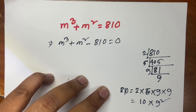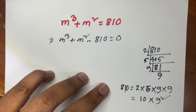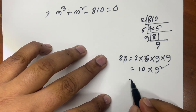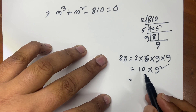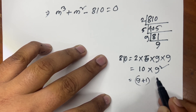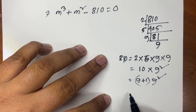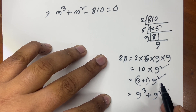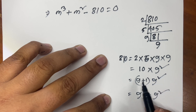So 810 equals 10 times 9 squared. And we know that 10 equals 9 plus 1, multiplied by 9 squared. Now I can say this gives us 9 cubed plus 9 squared.